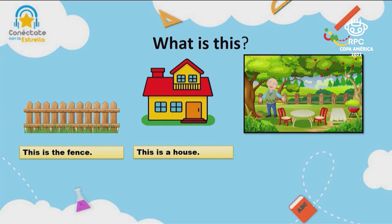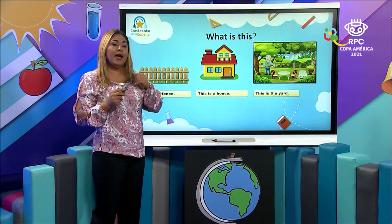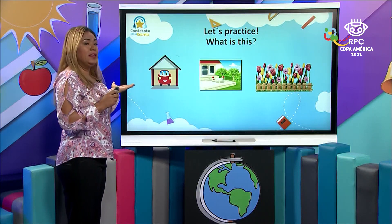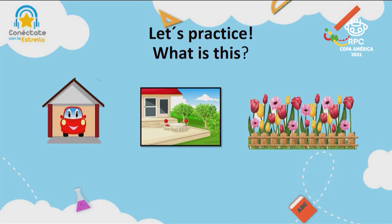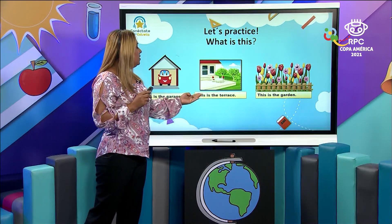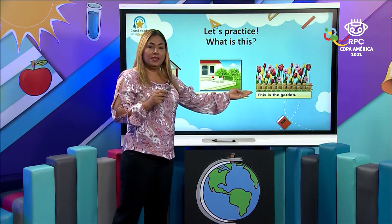What is this? Do you remember the name of this external part of the house? Yard. This is the yard. Very good. What is this? Do you remember the name of this place? This is the garage. What is this? This is the terrace and the place where you plant flowers. What is this? This is the garden. Let's practice again: this is the garage, this is the terrace, and this is the garden.